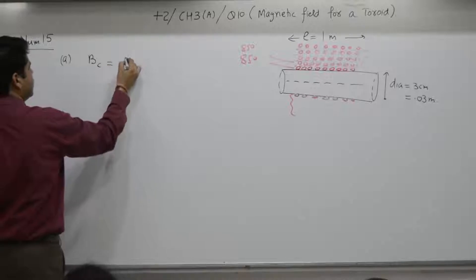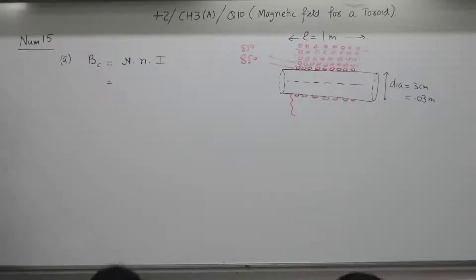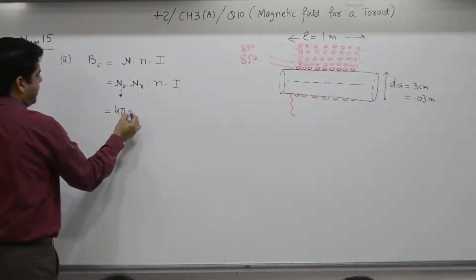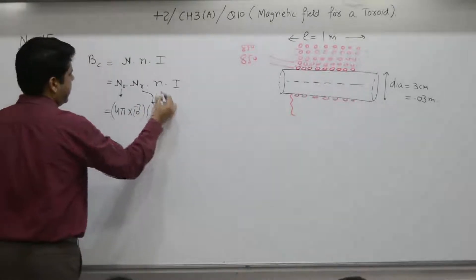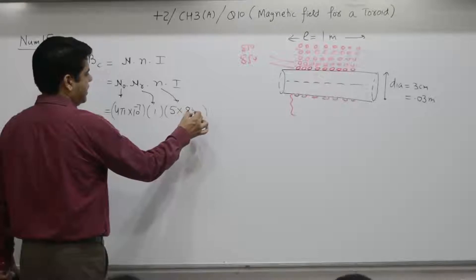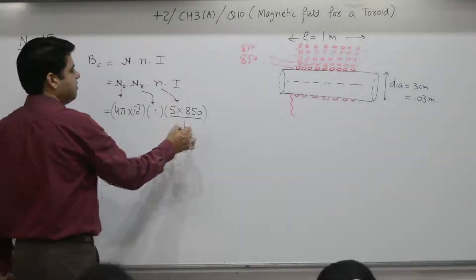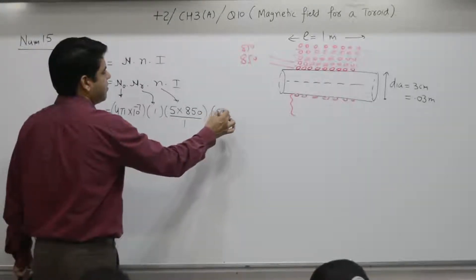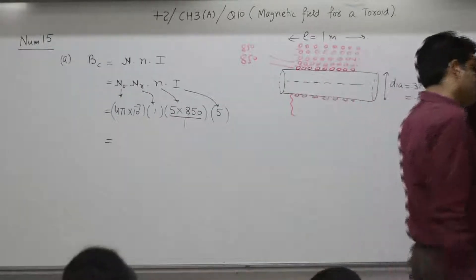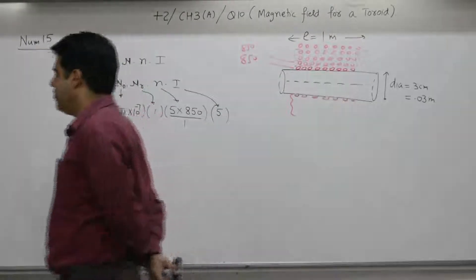Magnetic field at the center: B = μnI. The material μr is not specified, so assume air, μr = 1. B = μ₀ × μr × n × I. μ₀ = 4π × 10⁻⁷, μr = 1. N = 5 layers × 850 turns divided by length of 1 meter. Current is 5 amperes. Because it is at the center you can apply the formula for an infinite solenoid.